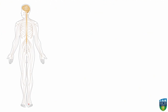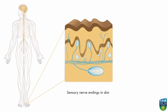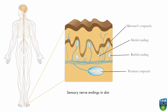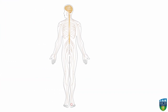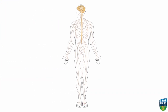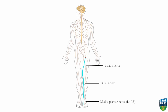Tactile sensation is mediated by several specialised types of nerve endings in the skin. In this case the impulse travels via the first order neuron from the big toe through nerves in the leg to reach the spinal cord via the lumbosacral plexus.